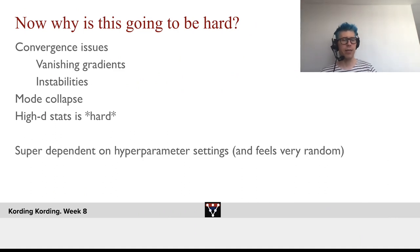Now, why is this going to be hard? There's going to be lots of convergence issues. If the generator is too good, the discriminator doesn't see gradients anymore. If the discriminator is too good, the generator can't see gradients anymore. There's instabilities.